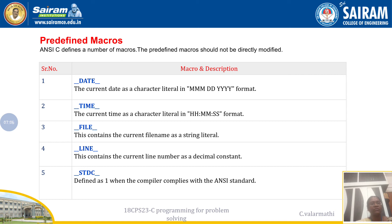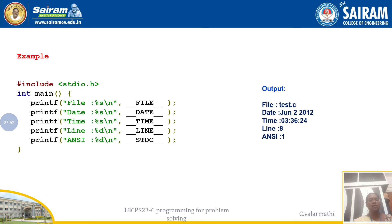`__FILE__` returns the name of the current file being worked on. `__LINE__` returns the current line number where the cursor is placed. `__STDC__` is defined as 1 when the compiler compiles in ANSI format, so since we follow ANSI standards, it will return the value 1. These are all predefined macros available in C compilers.